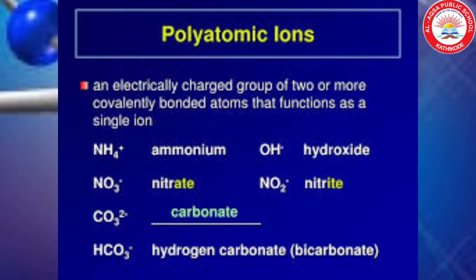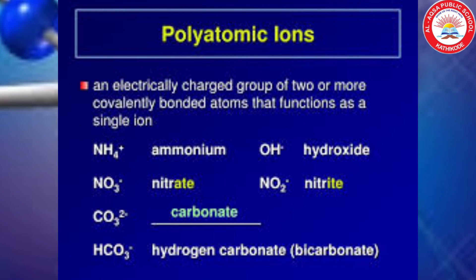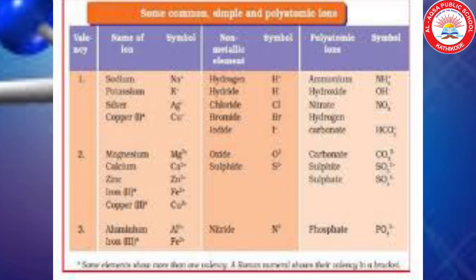A polyatomic ion is a group of atoms carrying a charge. For example: ammonium, nitrate, hydroxide, nitrite, carbonate, hydrogen carbonate, etc. Here we can see that different atoms have a common charge — these types of ions are known as polyatomic ions. In page number 37 you can see a number of polyatomic ions and their symbols. Please go through this page.